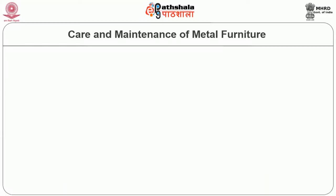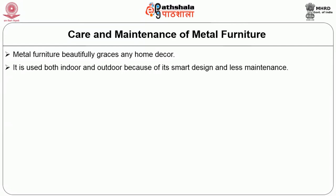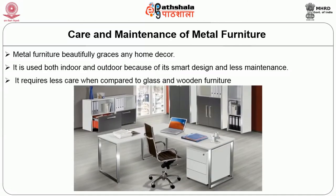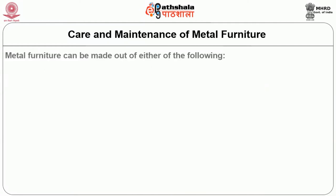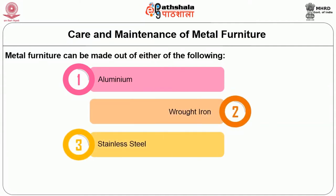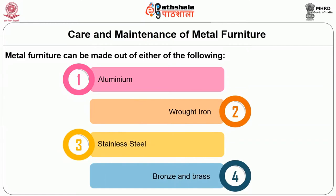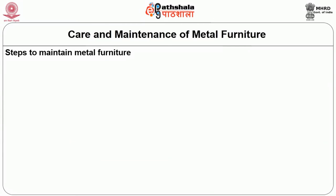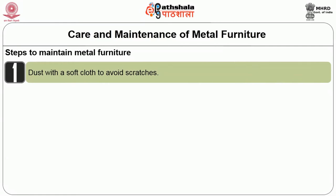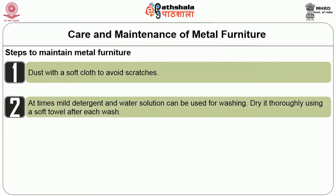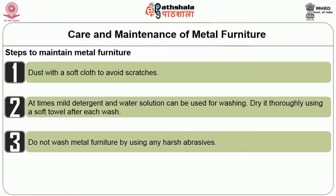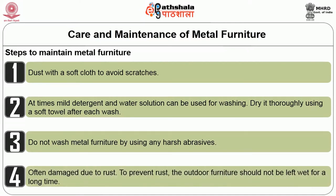Next I will explain how to take care of metal furniture. Metal furniture beautifully graces any home décor. It is used both indoors and outdoors because of its slim design and less maintenance requirement. Metal furniture can be made of aluminium, wrought iron, stainless steel, bronze, and brass. To maintain its attractive look: dust with a soft cloth to avoid scratches; mild detergent and water solution can be used for washing; dry it thoroughly using a soft towel after each wash. Do not use harsh abrasives on metal furniture.